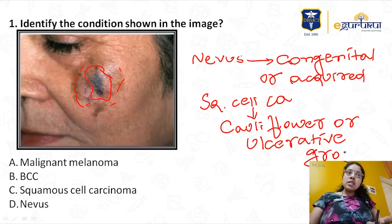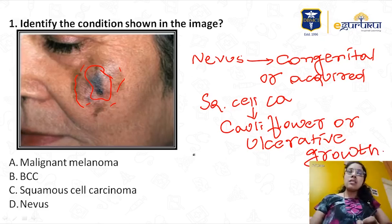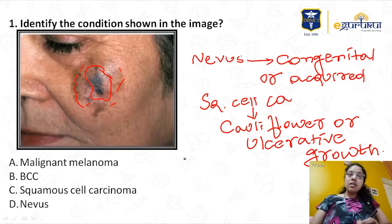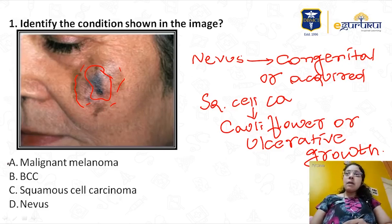What about BCC? Even basal cell carcinoma can present like this — there is a pigmented variant of basal cell carcinoma — but the surrounding hyperpigmentation may not be a feature. So the correct option here could be malignant melanoma.